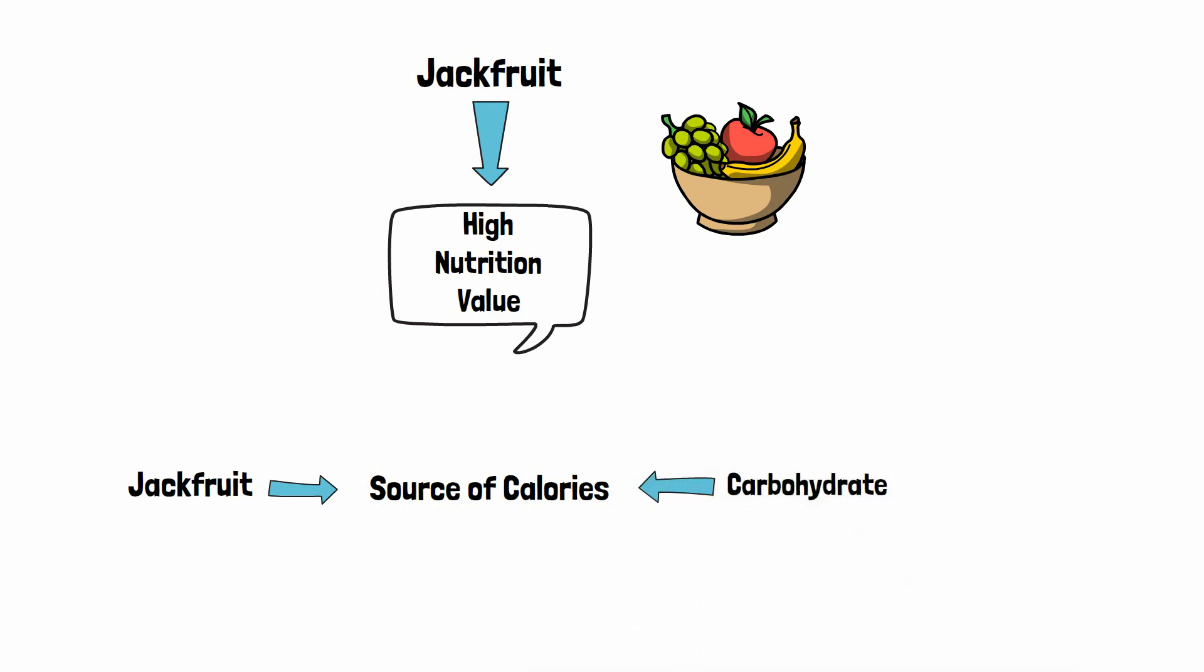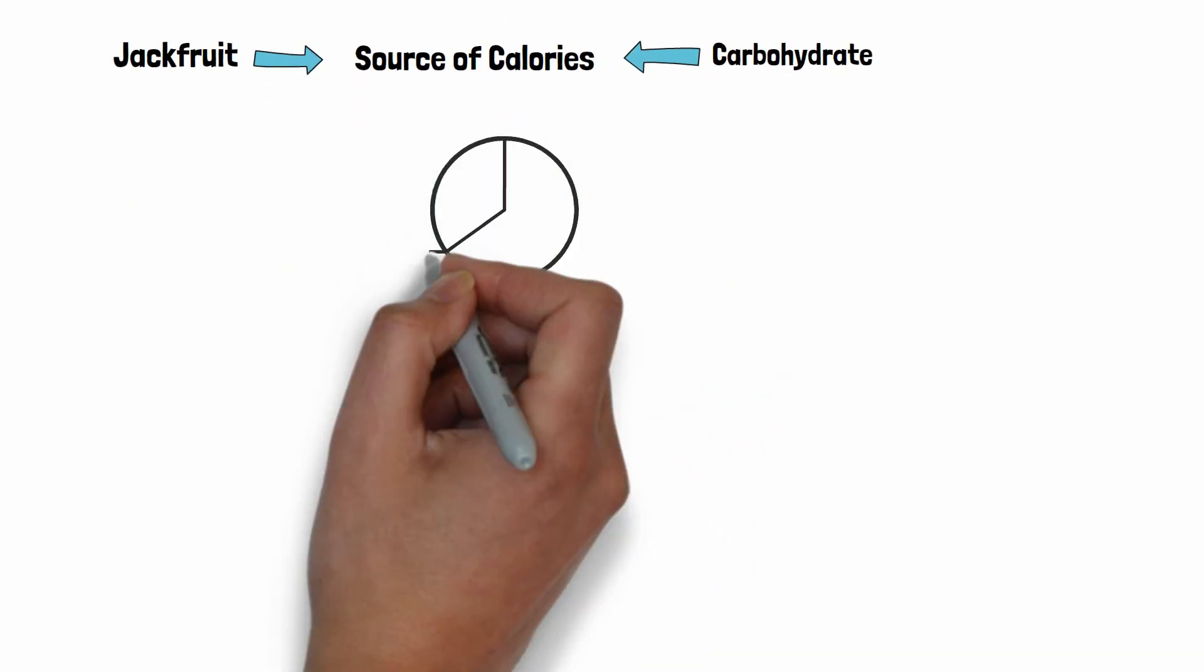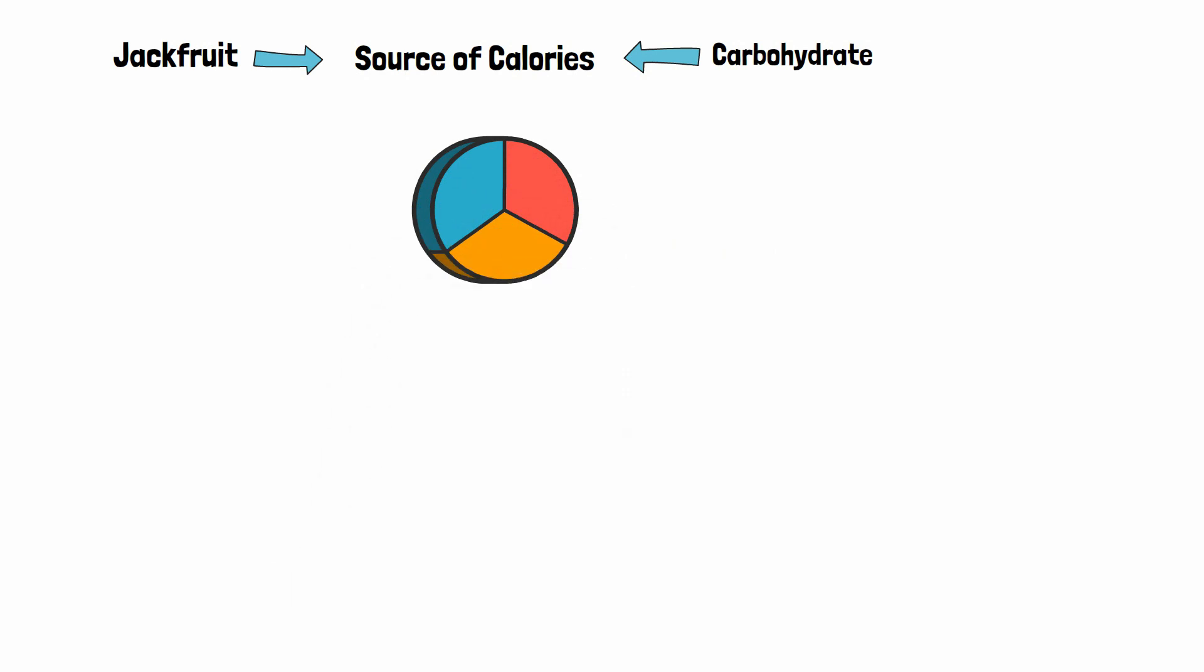The majority of the calories are supplied by carbohydrates. 100 grams of edible jackfruit contain 30 to 35 grams of carbohydrates.